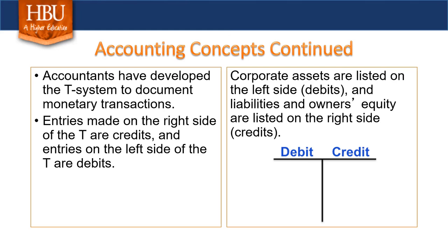Keeping with our basic accounting concepts, this slide introduces the basic T-system, a term you're going to see often in finance and sport finance. A T-system is essentially where debits or expenses are listed on the left-hand side, and credits or equity are listed on the right-hand side.